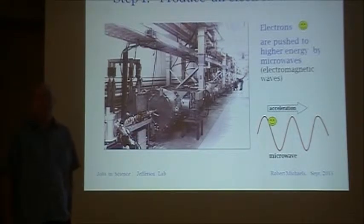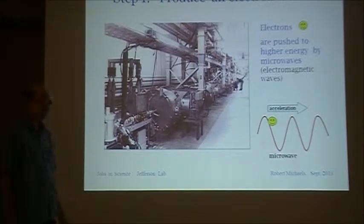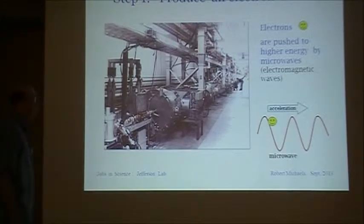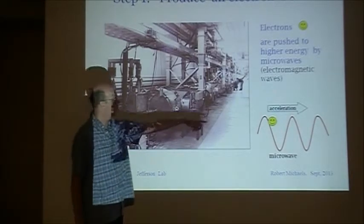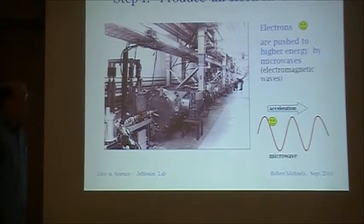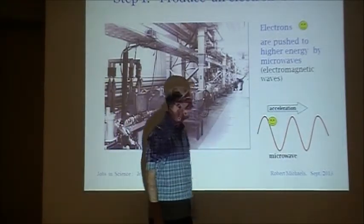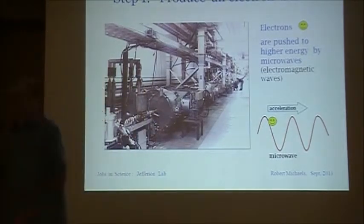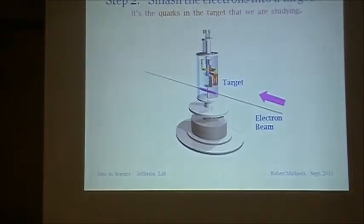Step one is you have to produce an electron beam. This picture shows the electron accelerator and it has these microwave cavities, a little bit like a microwave oven but very powerful. The electrons are pushed to higher and higher energies by the microwaves which are electromagnetic waves. They get accelerated by them. One way to think of this is that the electrons are kind of like a surfer riding a wave, and the wave pushes the surfer to higher energy.